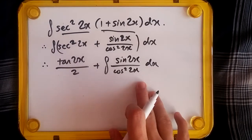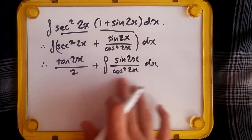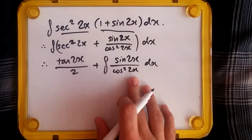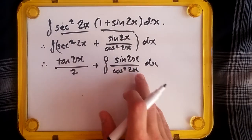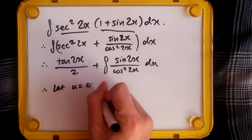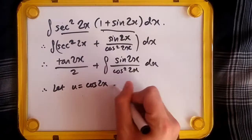Okay, the way this works: we can use substitution. Let u equal cos(2x). Differentiating, or by the definition of integration, we should get negative sin(2x). So let u equal cos(2x). Differentiating...